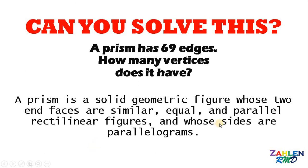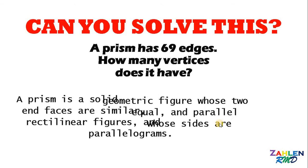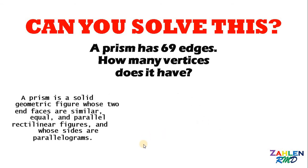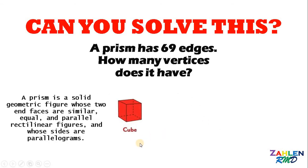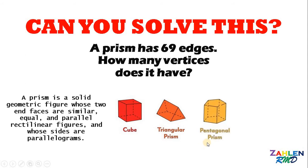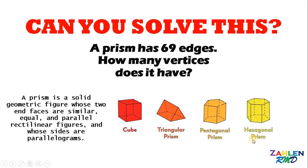Let's look at some examples of prisms. The first one is a cube. The second one is a triangular prism. Next, we have a pentagonal prism, and the last one is a hexagonal prism. There are many prisms out there, but here are four basic examples.